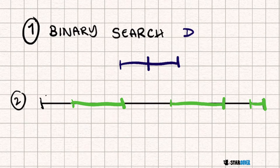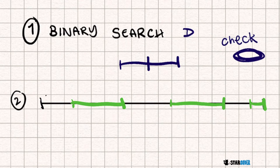In the checking function, we check whether we can place our cows so the minimum distance between any two cows is D. If we can, we return true; if not, we return false. If it returns true, we go into the bigger section and split that in half. If it returns false, we go into the smaller section and split that in half. That's the basic idea of the binary search.